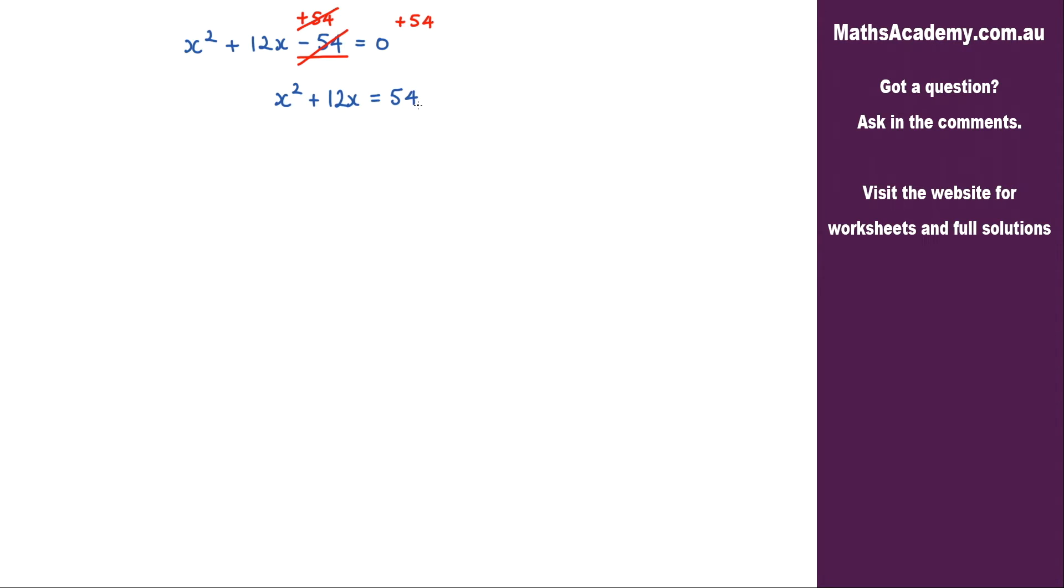Now the next step is the completing the square bit. In other words we're going to have something squared on the left equal to the 54 plus a number squared. Now this x² term here obviously we'll have the x squared and then we look at this coefficient here. So this will tell us what goes in here. Now obviously it's positive so we're going to have the plus here. We take this coefficient and we divide it by 2. So I'm going to get 12 over 2. Now I need to do the same on the right hand side. It's going to be that coefficient divided by 2 but it's going to be squared.